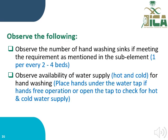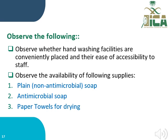Also observe whether the number of hand washing sinks meets the requirements — one for every two to four beds in critical care areas and one for each patient room. Observe the availability of hot and cold water supply; you can place your hand under the faucet or open the tap to check. Verify that hand washing facilities are conveniently placed and easy to access by staff. Check availability of supplies: plain soap, antimicrobial soap, and paper towels for drying.